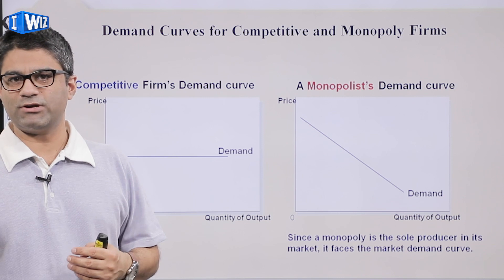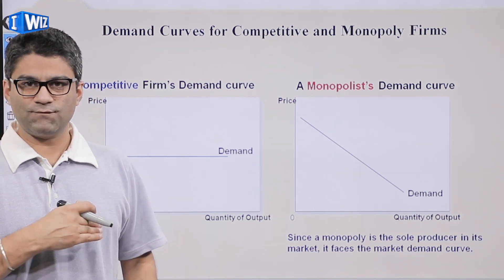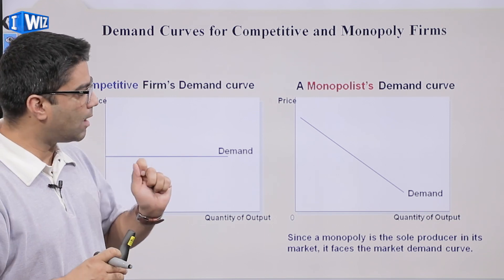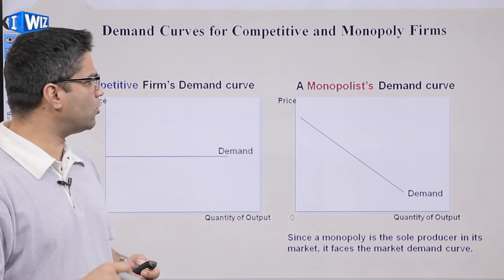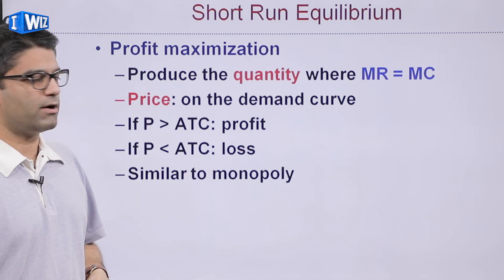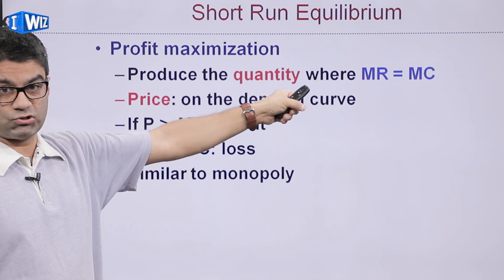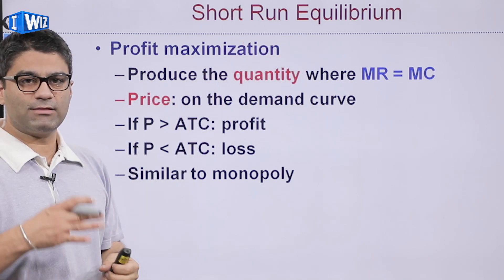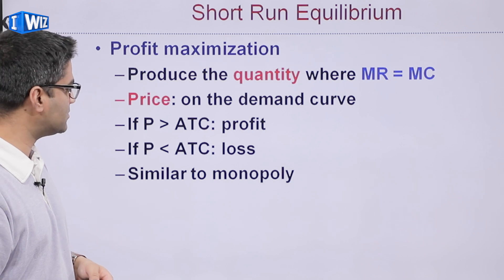Think about restaurants as an example. If you prefer Chinese food, you might be willing to pay slightly more for it. However, if that restaurant raises its price by 200%, you have alternatives — you might cook at home or try other cuisines. In monopolistic competition, products are not identical, you have some substitutes, but you also have preferences toward one good. The profit maximization process is still the same: choose quantity where MR equals MC. Price comes from the demand curve of that particular producer, and if price is more than ATC they earn a profit; if less than ATC they earn a loss, similar to monopoly.